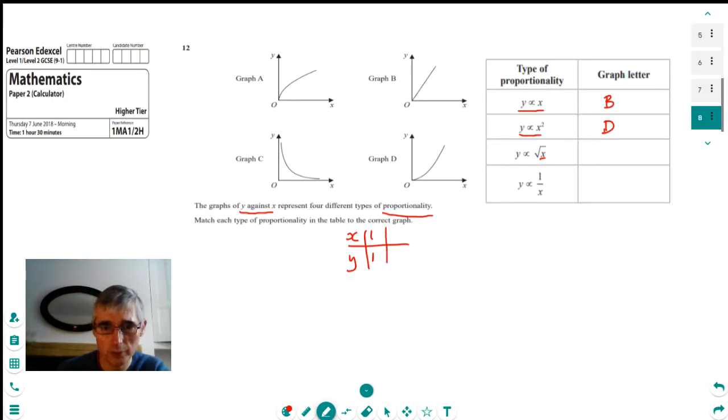But then, let's pick another value. Let's say x is 25. What would y be? Well, y would be proportional to the square root of that. So y would be the square root of 25, and it would give us 5. So we can see that y is actually going up more slowly than x. So that would be graph A.